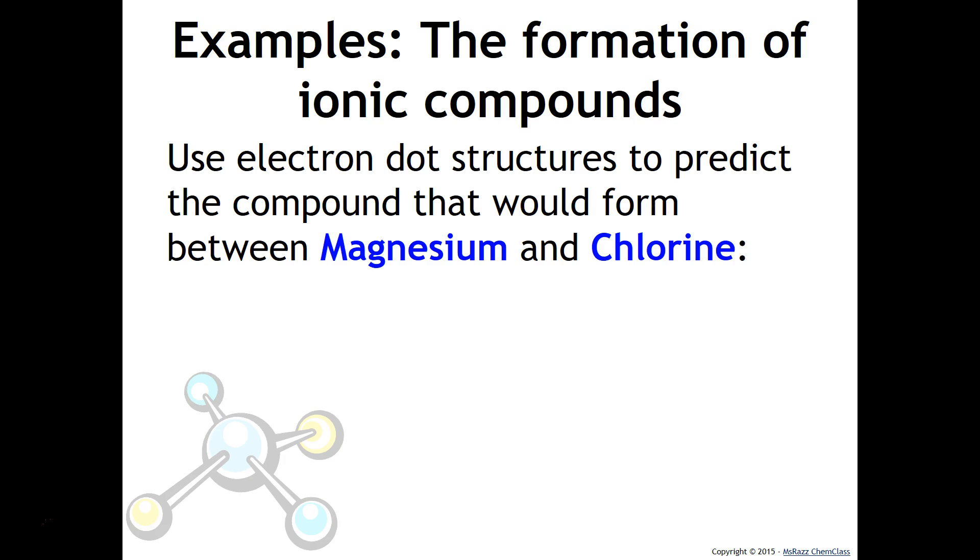Here's another example. We want to use two different atoms to illustrate how an ionic compound will form. We have magnesium and chlorine. Magnesium has two valence electrons. Chlorine has seven. As we mentioned, we would expect magnesium to lose an electron because that's the metal to the chlorine because chlorine has a much greater attraction for those electrons. But if you notice, chlorine is now satisfied with its octet of eight electrons.